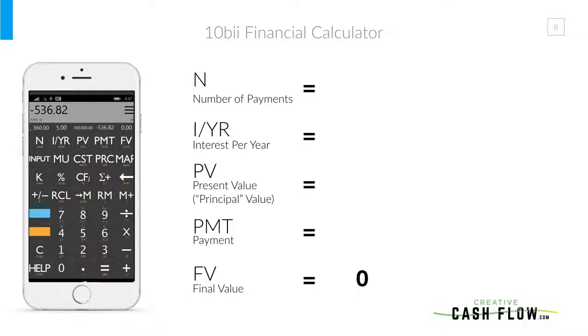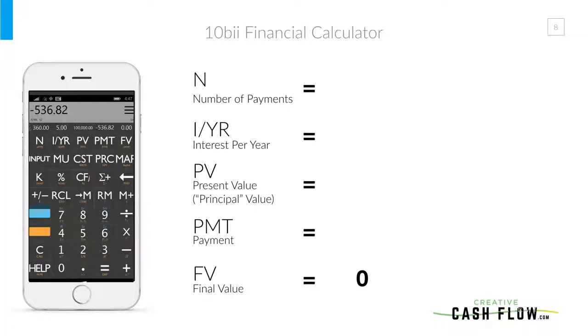That's where our trusty calculator comes into play. So let's look at the 10B2. If you haven't already downloaded it, go do that now. For this calculator to work, all we need to know is four of the five items — and the calculator will solve for the fifth one. One of the nice parts is that for our sake we're always putting zero in the FV field, because we have fully amortizing loans. The only time you wouldn't put zero in FV is if you're doing a balloon note.